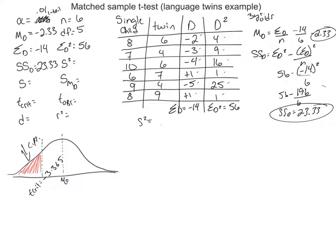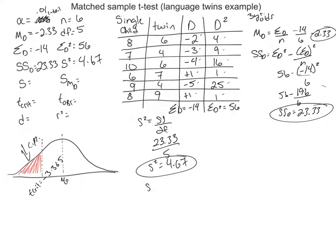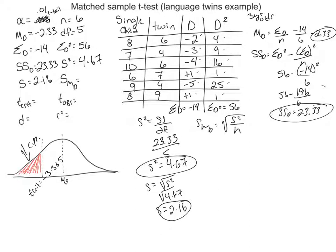Now we can find variance: sum of squares, 23.33, divided by degrees of freedom, 5, gives a variance of 4.67. Taking the square root gives a standard deviation of 2.16. Then the estimated standard error of the mean difference is the square root of variance divided by sample size — square root of 4.67 divided by 6 equals square root of 0.778, which gives 0.88.